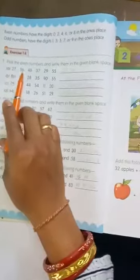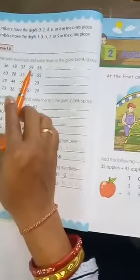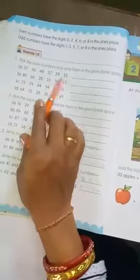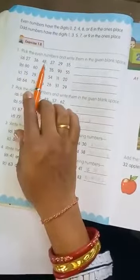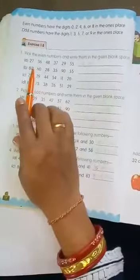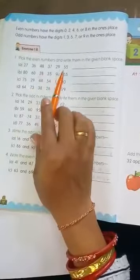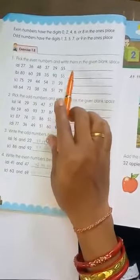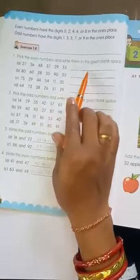Part A: 27, 36, 48, 37, 29, 55. We need to find the even numbers. Even numbers end in 0, 2, 4, 6, or 8. The even numbers are 36 and 48.